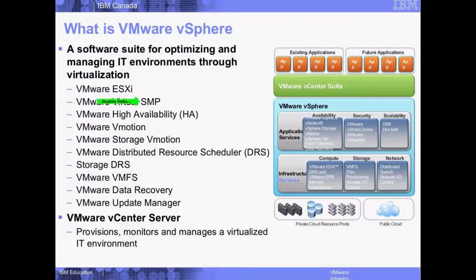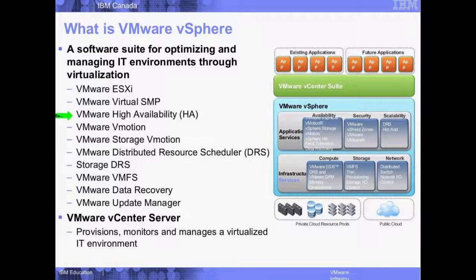VMware High Availability comes with the vSphere suite. It protects VMs in case a physical host fails. When virtualization first came out, people would say 'I've got all my eggs in one basket' — all your physical machines virtualized onto one server, and if that server blows up, all those VMs are gone. With VMware HA, if you've got multiple hosts in a cluster and one fails, the surviving hosts can take over and start up those VMs. The VMs do go down momentarily, but they're back up usually within a minute or so.